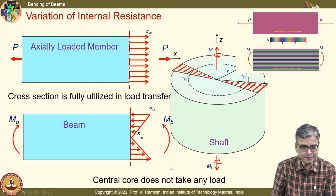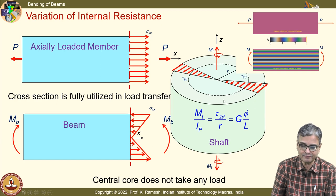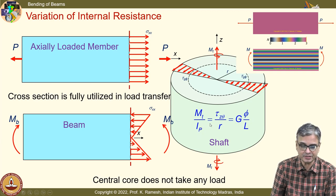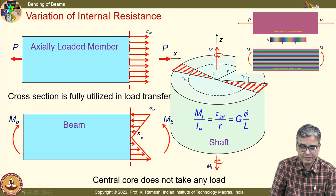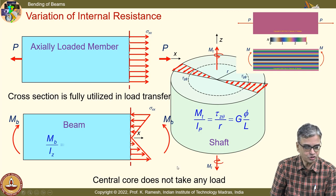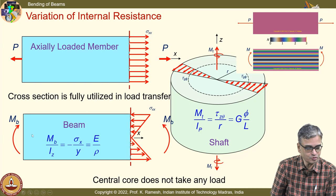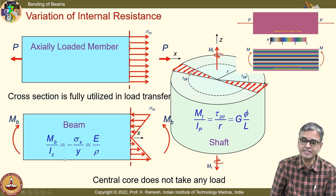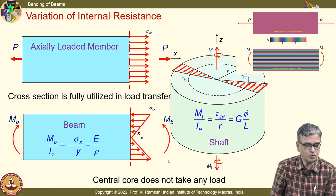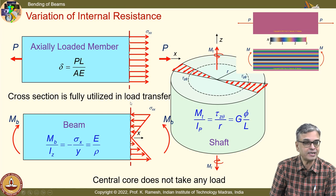We developed important relations — the torsion formula: M_T / I_P = τ_zθ / R = Gφ / L, valid for constant bending moment and constant cross section. You also know the flexure formula. Your next course on design of machine elements can be done with just these two expressions. For the axially loaded member, the celebrated relationship is δ = PL / AE — these are celebrated expressions you need to remember; you will not have time to derive from first principles.